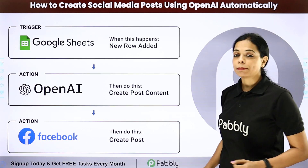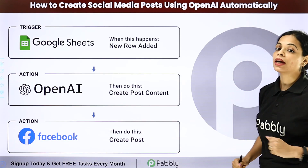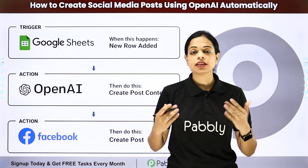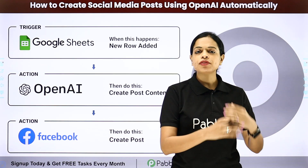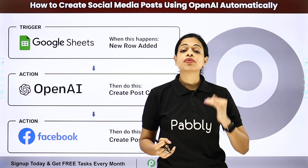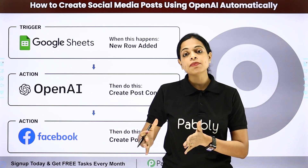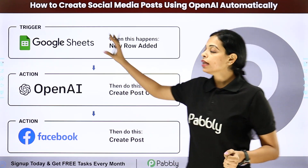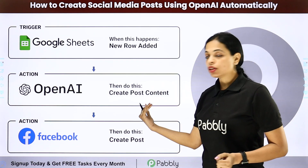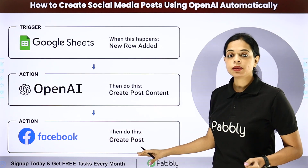Let's see another example: how to create social media posts using OpenAI automatically. Let's say that I'm a social media influencer where I have to update my social media posts every now and then. Then instead of writing and creating the content and wasting a lot of time, what I've done is in my Google Sheet I've created certain titles. With that, I've generated the post content and then on Facebook I've created the posts.